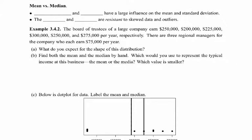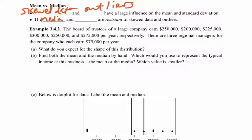Here's the part you want to remember: skewed data and outliers tend to have a large influence on the mean and the standard deviation. For that reason, we use the median and the IQR because they are resistant to skewed data and outliers.